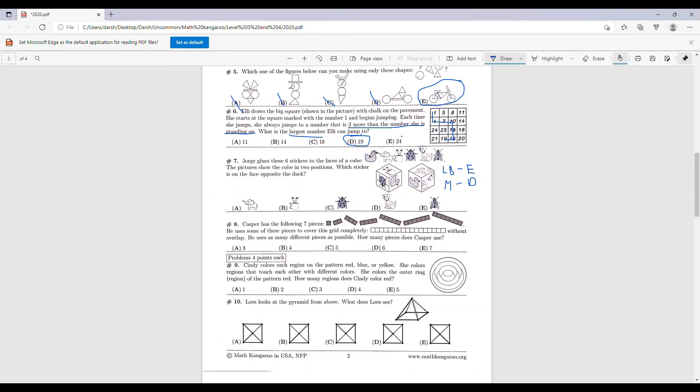So if you notice, that leaves us with only the duck and the fly. So that means the duck has to be opposite to the fly, which means the answer to number seven is E.